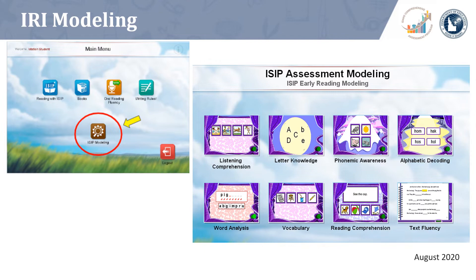IRI modeling is located within the student application for iStation. The student will need to log into iStation with a username and password. Once logged in, the student can click on the modeling icon and choose ICIP Early Reading Modeling. This will open a screen that lists each available subtest. Click on the test you would like to see modeled. Modeling allows the student to practice using the features of each subtest, in addition to hearing how the directions are given.